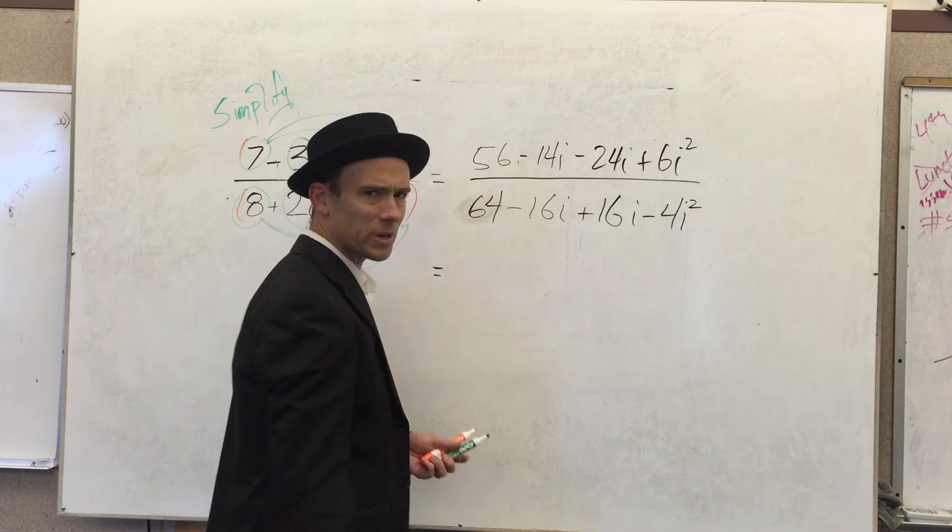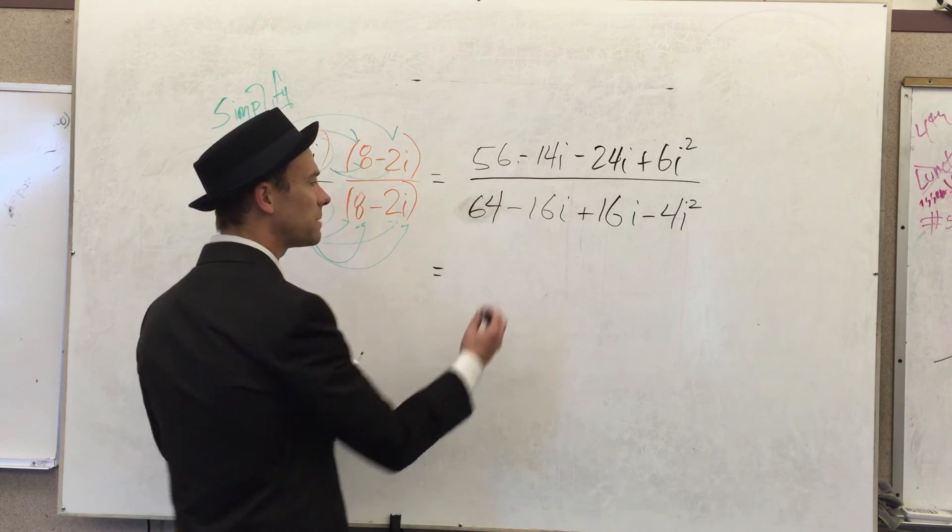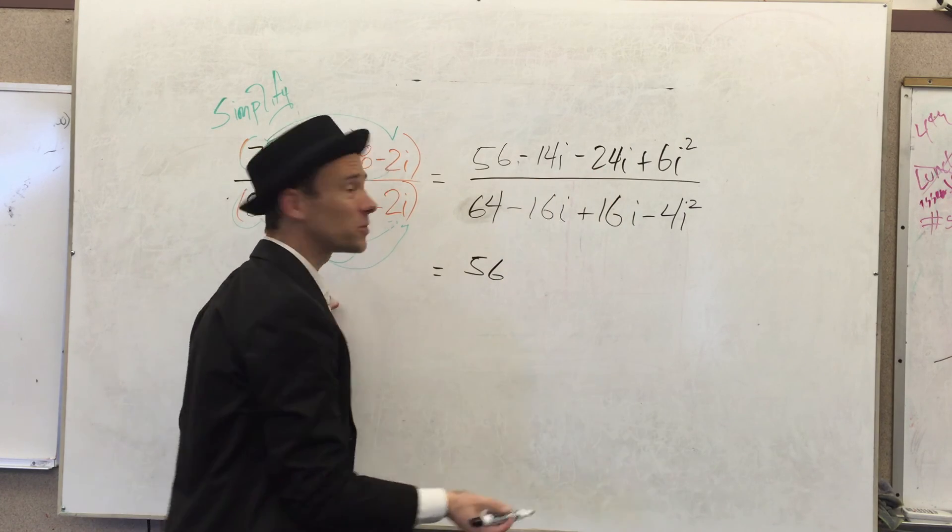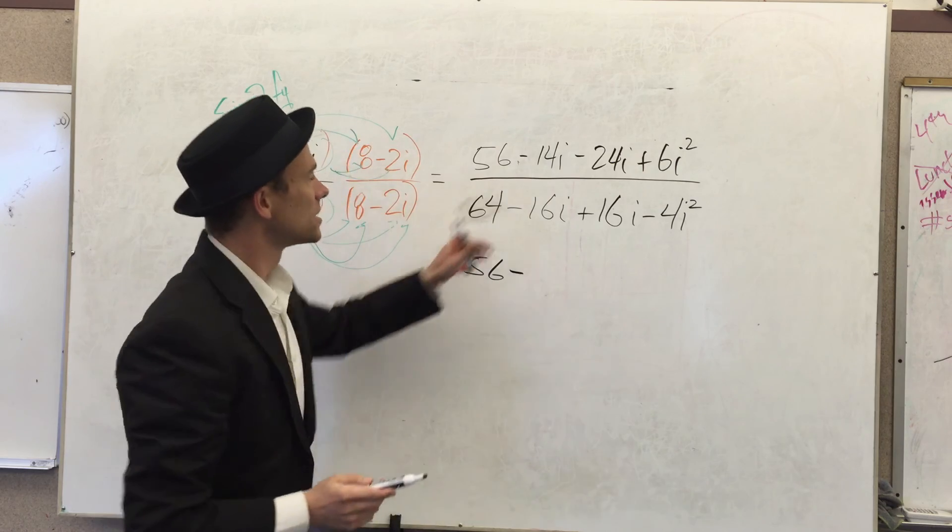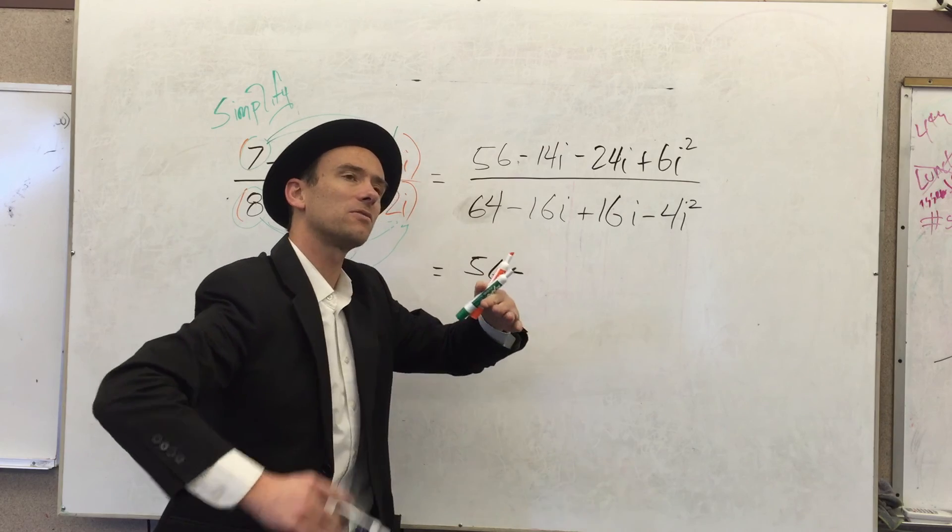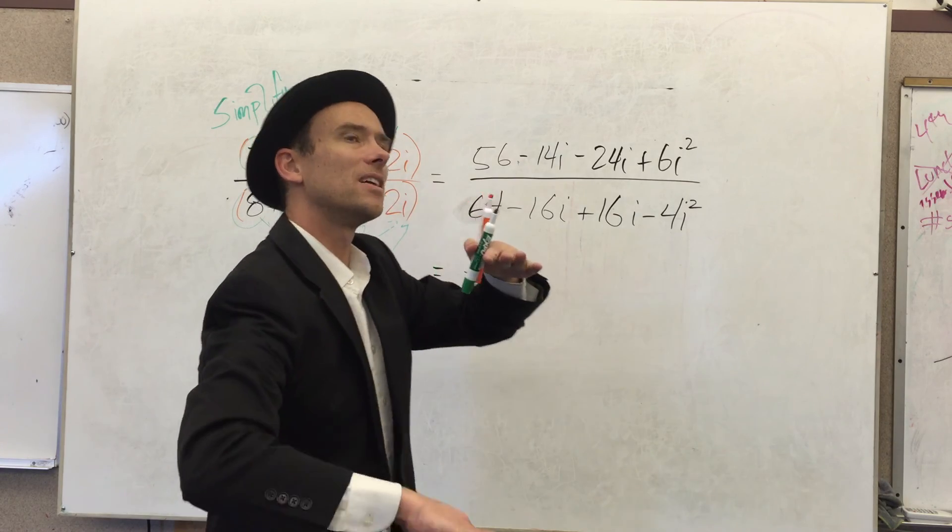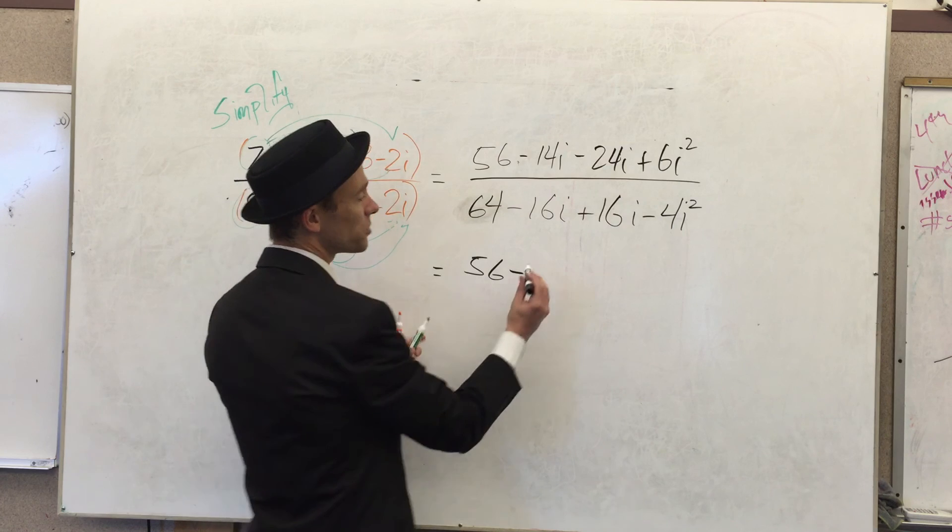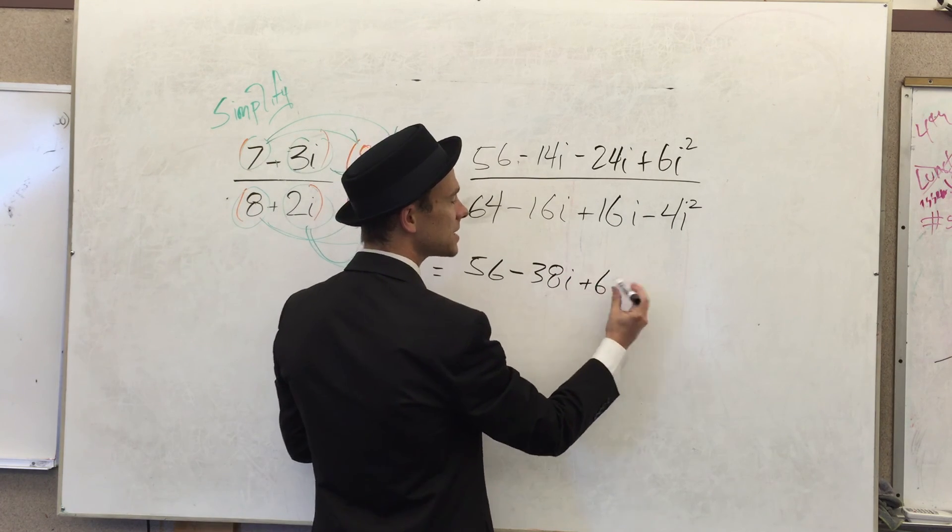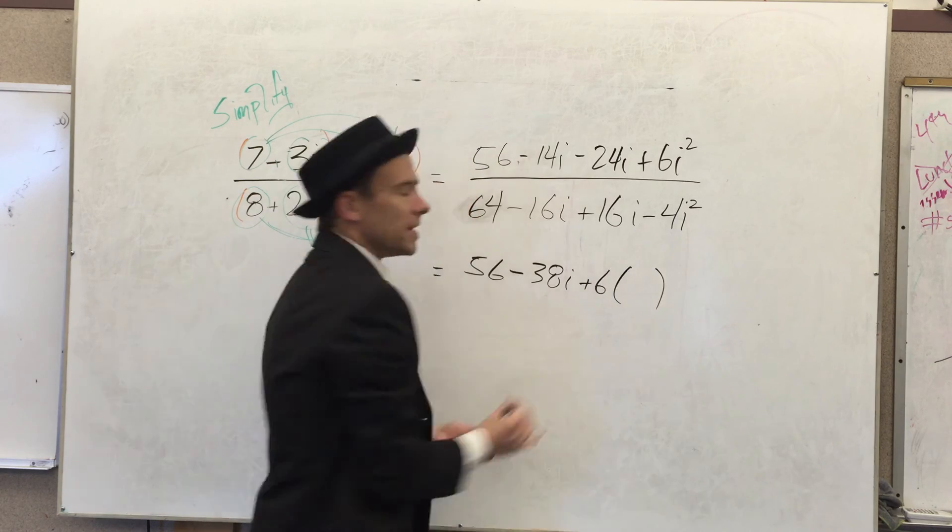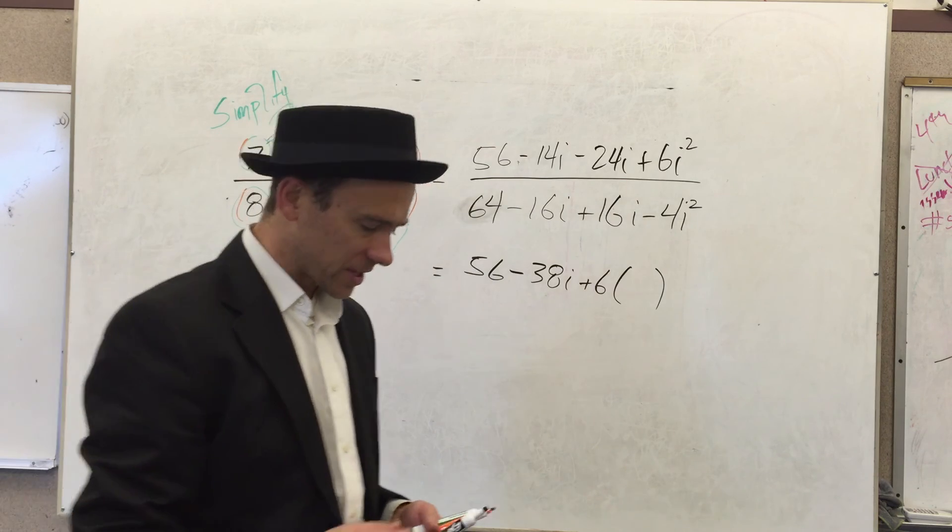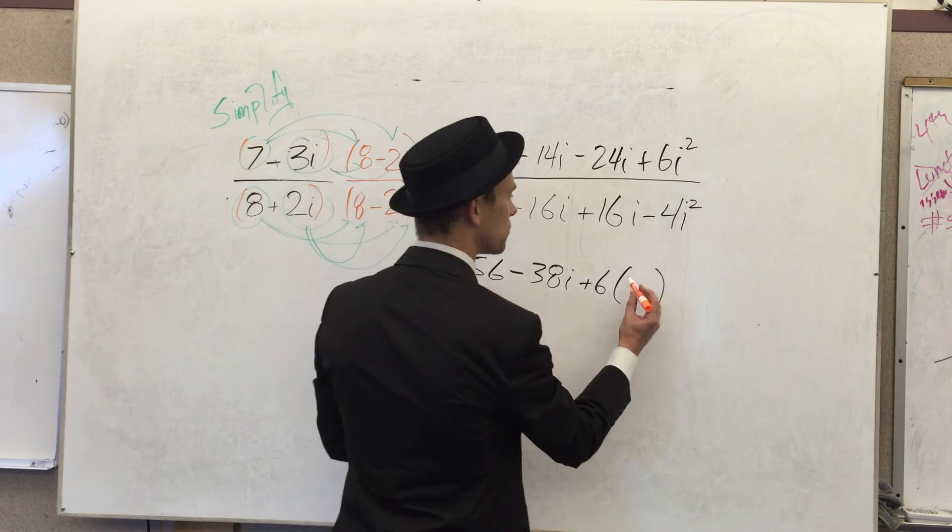So let's go get it. We almost done, people. I'm going to combine my like terms. 56, negative 14i minus 24i is minus—wait, negative 14, I'm subtracting 24, so I got to get smaller than negative 14, I got to get more negative than negative 14. That's going to give me negative 38i. Plus 6 times—